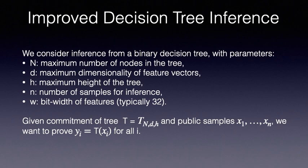In the final part of this talk, we describe a construction for verifiable decision tree inference, which is the problem considered in a recent work of Zhang et al. presented at CCS 2020. We consider inference from a binary decision tree with parameters N denoting the maximum number of nodes in the tree, d denoting the maximum dimensionality of feature vectors, h denoting the maximum height of the tree, small n denoting the size of the batch for inference, and w denoting the bit width of feature values, typically 32 bits. Given a commitment of the tree t, public samples x1 to xn and predictions y1 to yn, we want to prove that yi is equal to t of xi for each i. That is, tree t yields the prediction yi on feature vector xi.